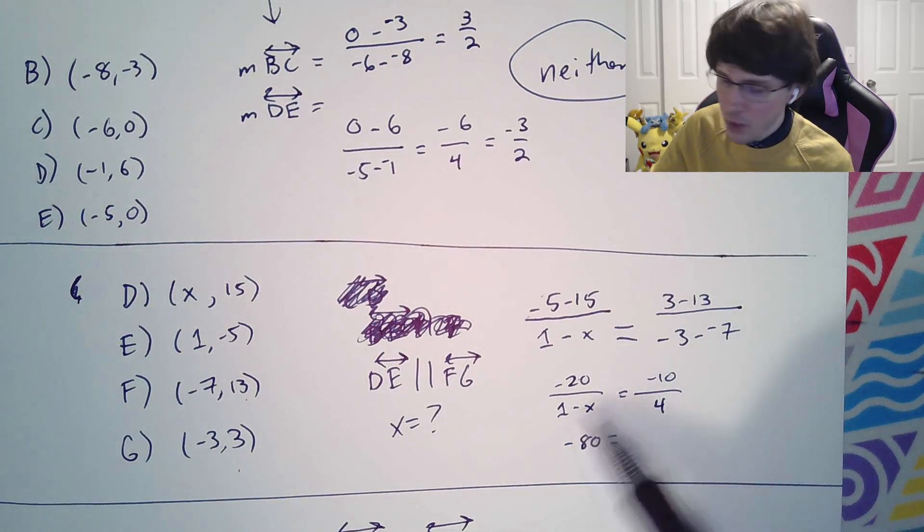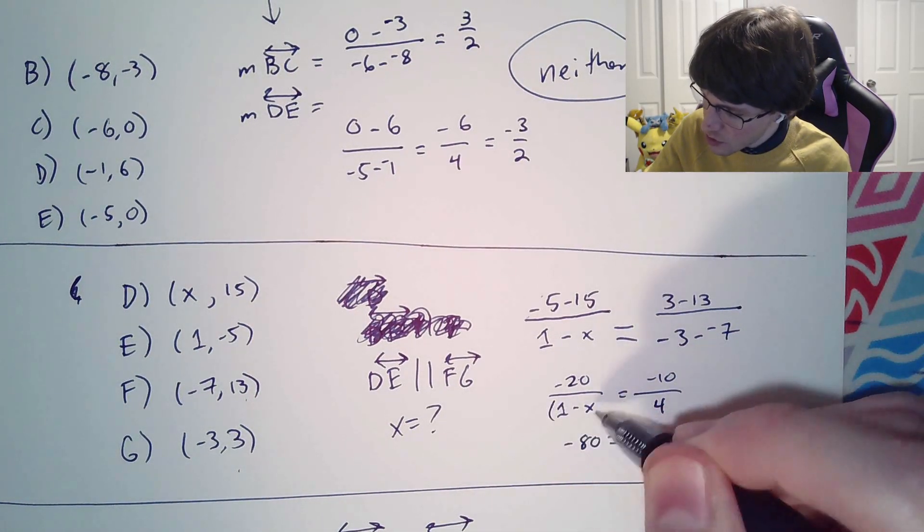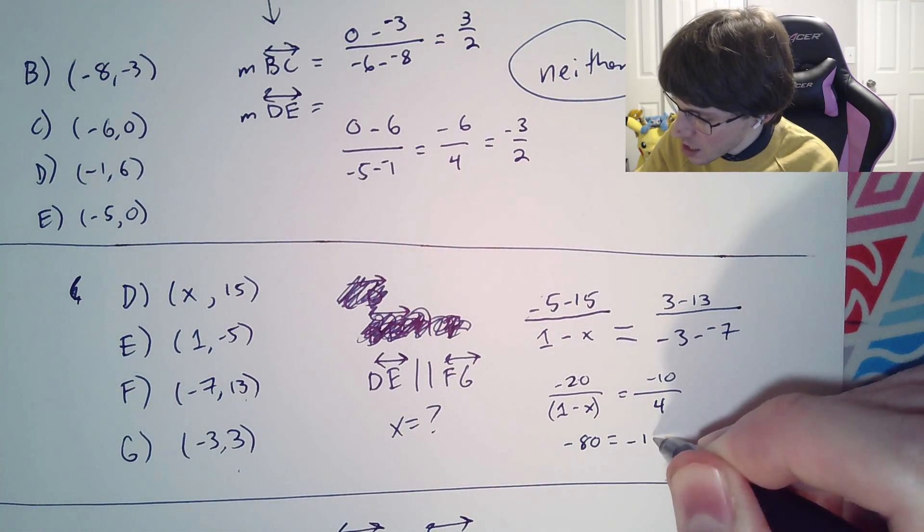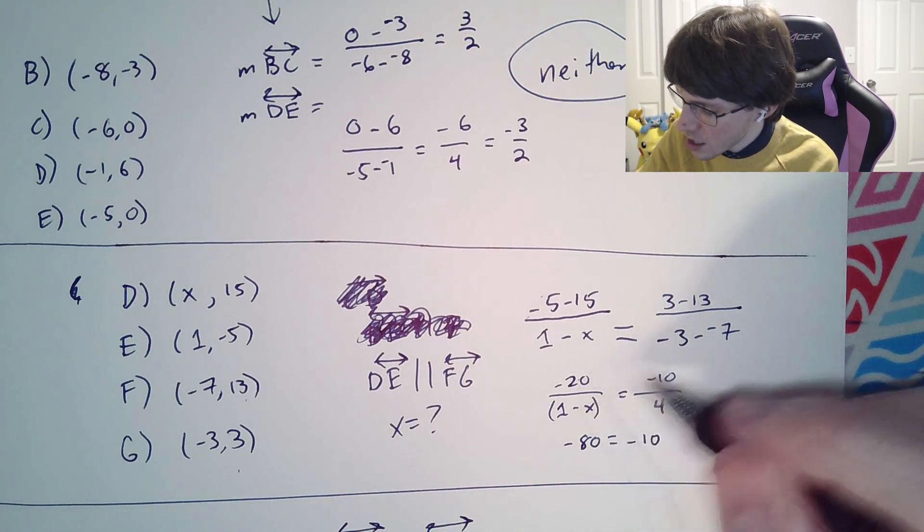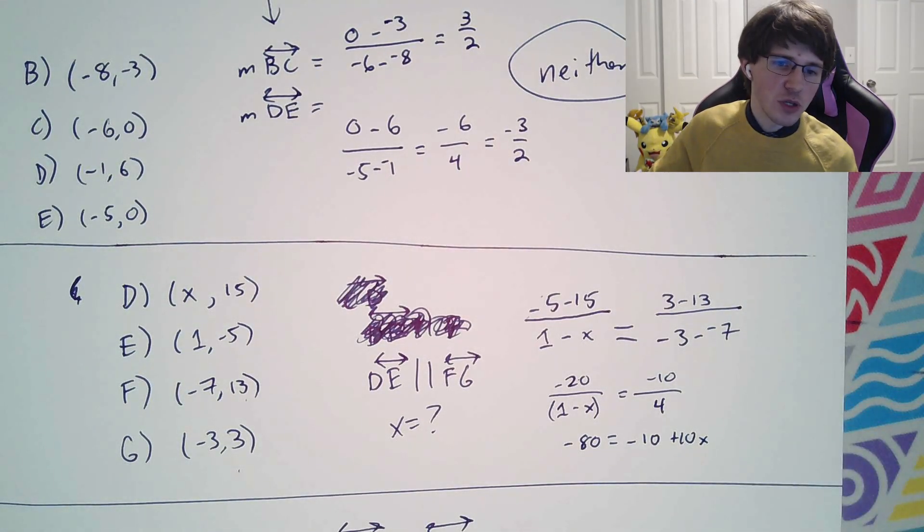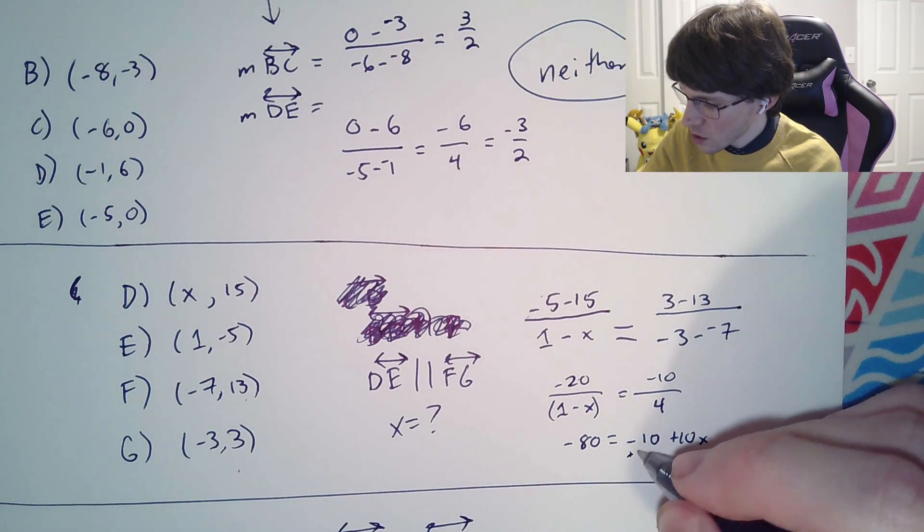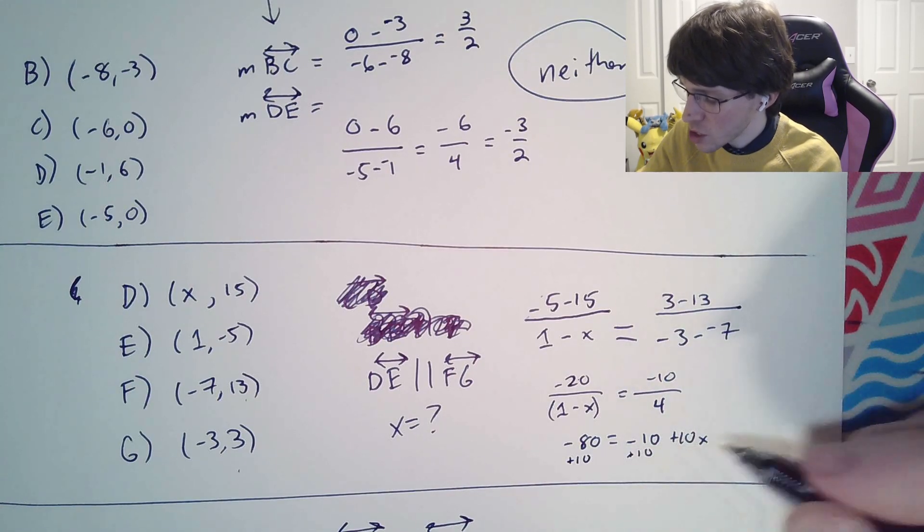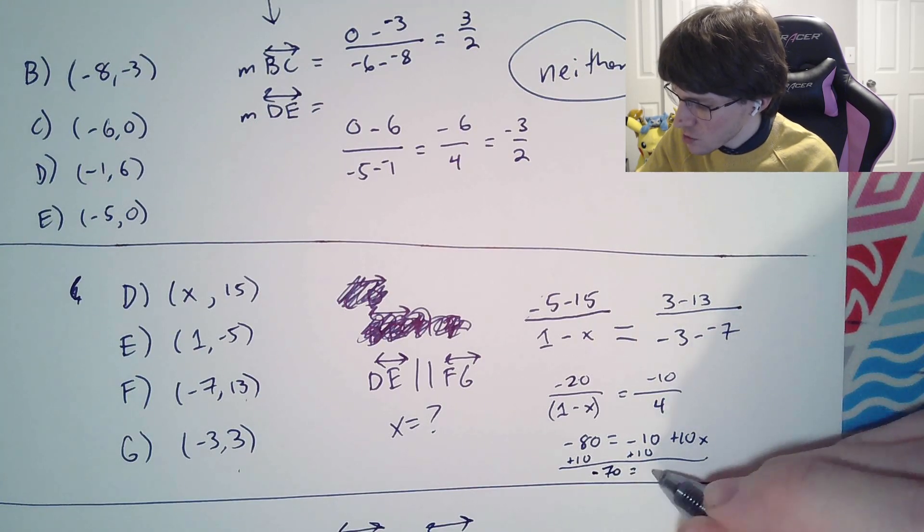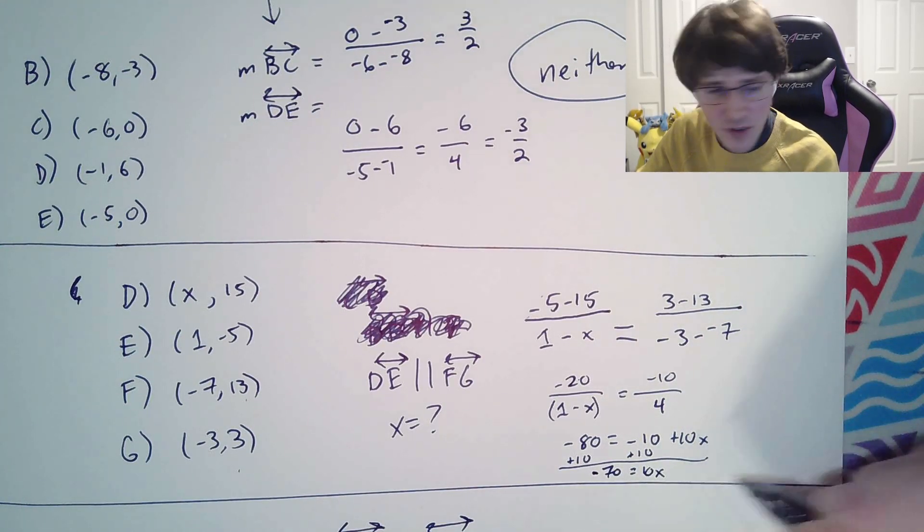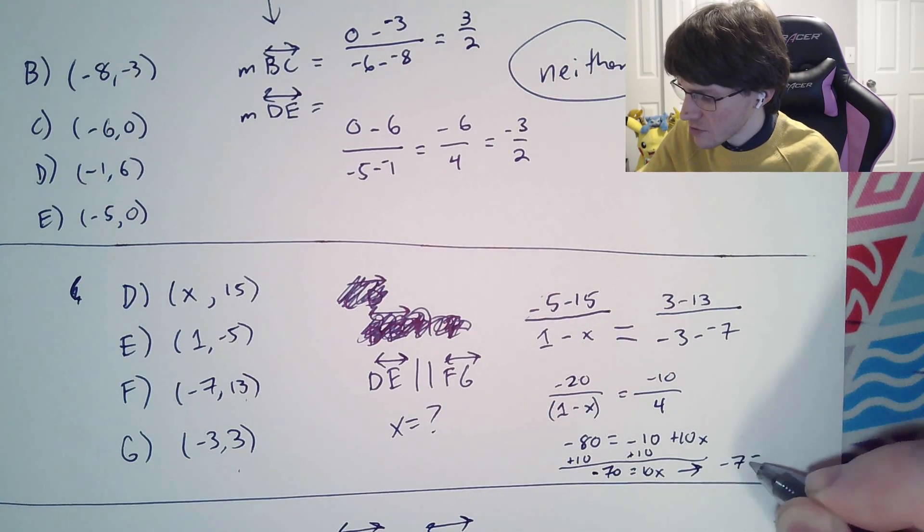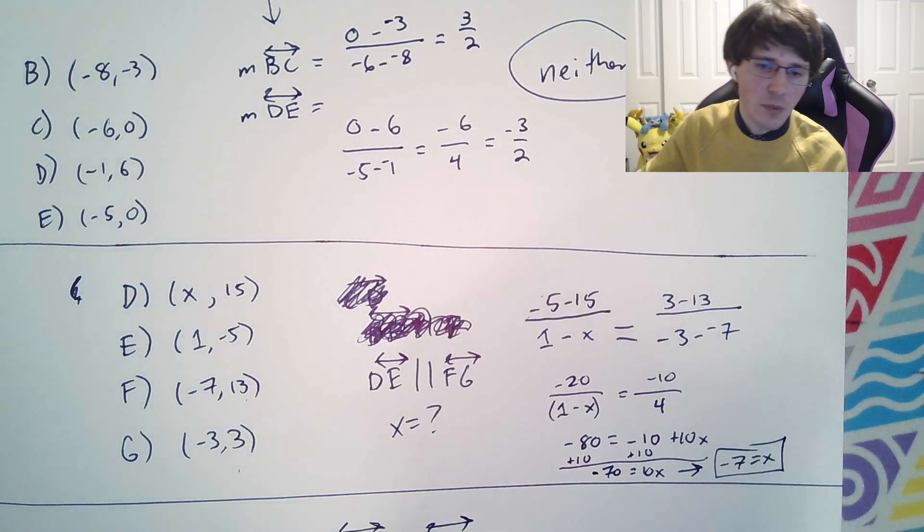After you do that, this is where you might want to use that algebra 1 trick of cross-multiplying. So we're going to have negative 20 times 4, which is negative 80. And remember when you are multiplying this, it's kind of like you're doing distributive property with the parentheses around that. So in this one, you'd end up with a negative 10 and then plus a 10x. Now it should be super easy to solve. It would have ended up with negative 70 is equal to 10x. Divide both sides by 10. And you'll get negative 7 is equal to x.